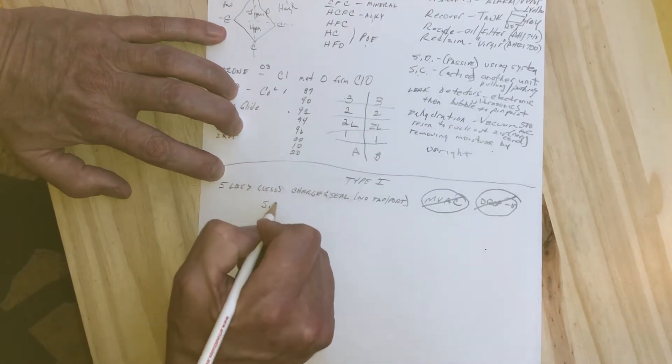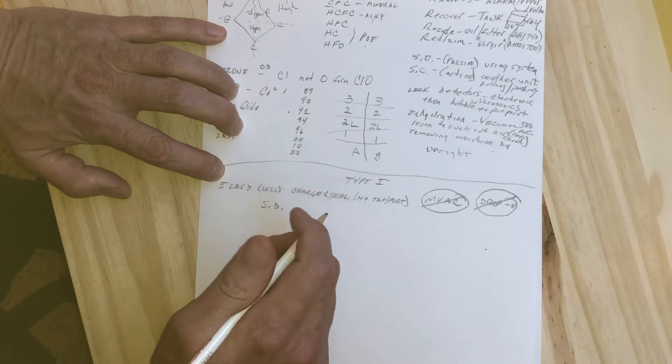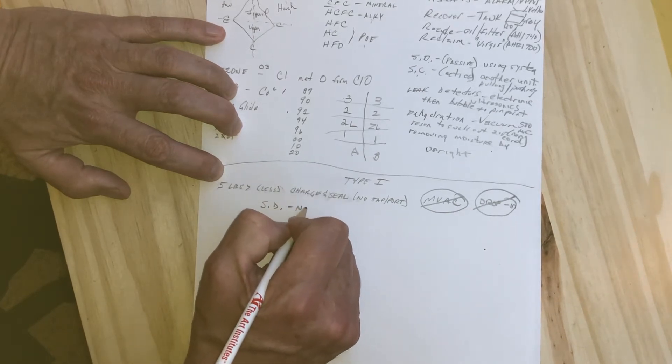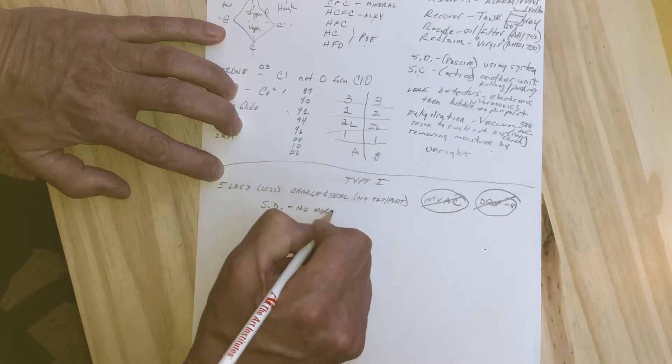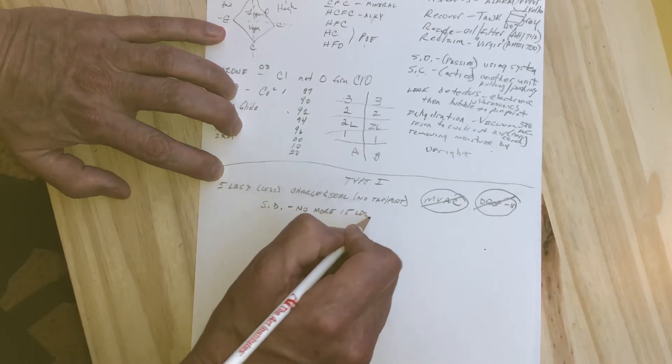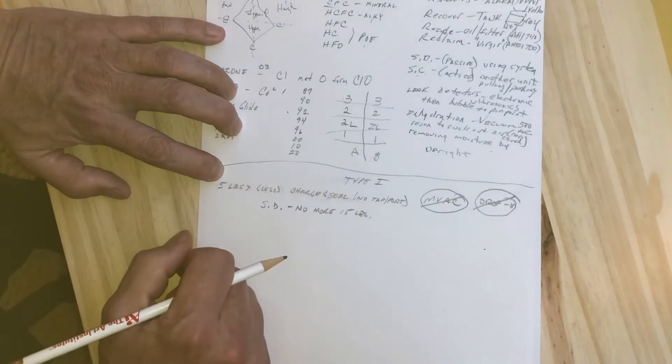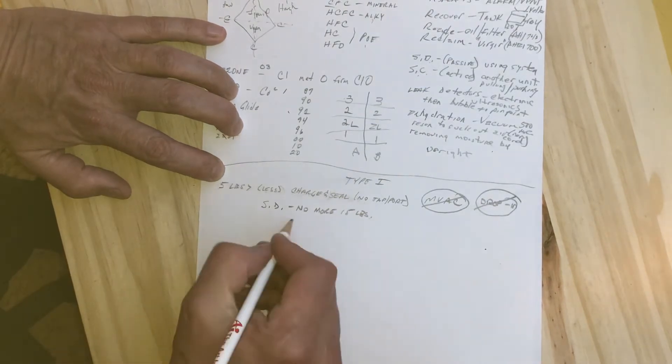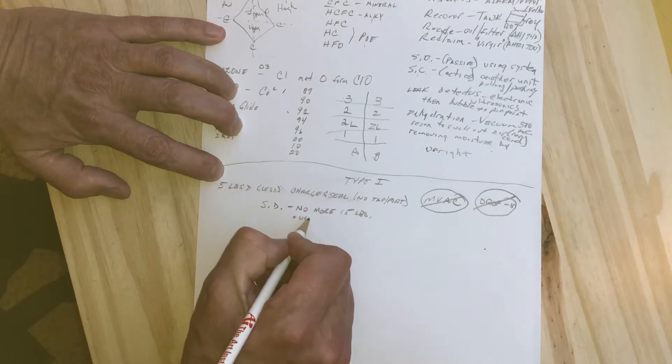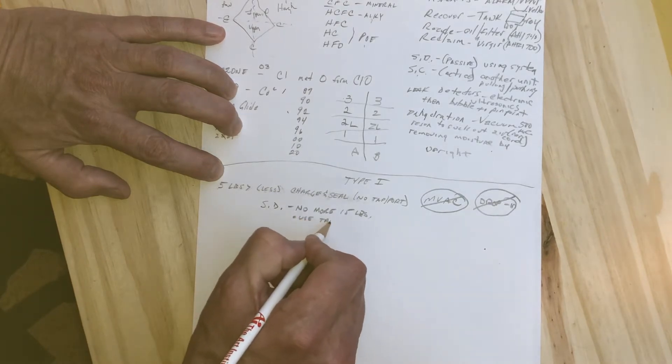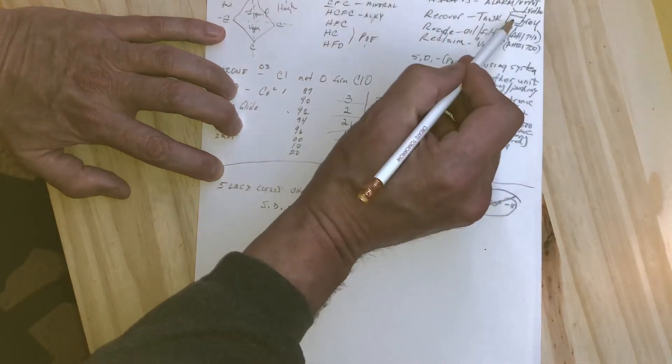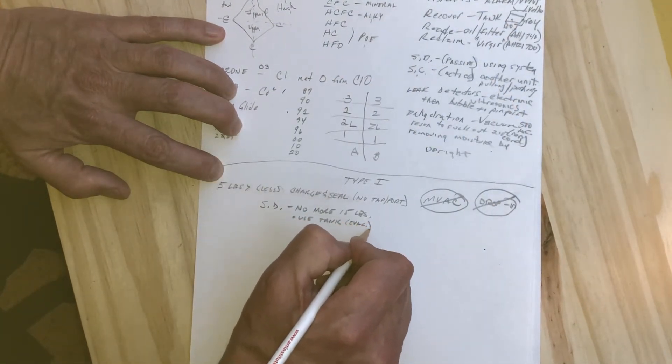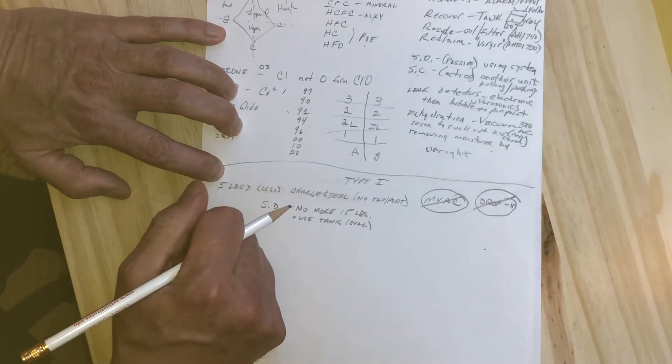Let's talk about the system-dependent recovery process for Type 1 appliances. No more than 15 pounds if you're doing system-dependent. It can be done in a non-pressurized container, in a bag, or an evacuated recovery tank, which can act as a system-dependent recovery device.